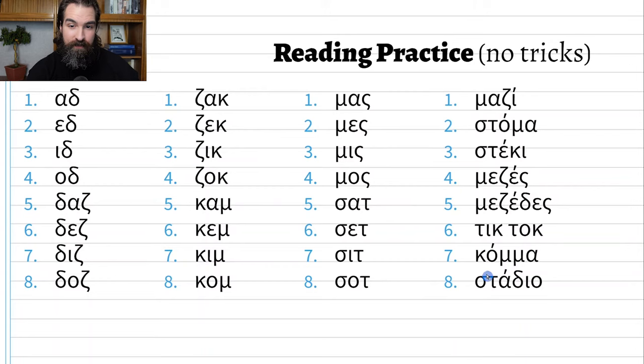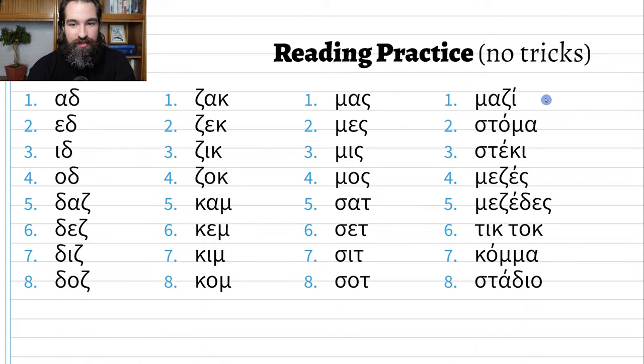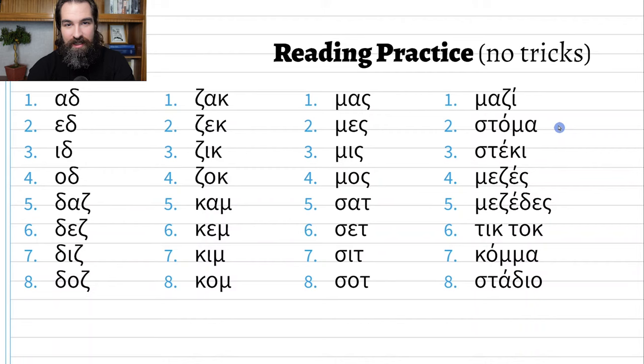Now we're going to read some real Greek words — day one or two and you're already reading! Number one means 'together' and is pronounced 'mazi.' Number two is 'stoma,' we have sigma, tau, omicron, mu, alpha. Number three: sigma, tau, epsilon, kappa, iota — 'steki.'